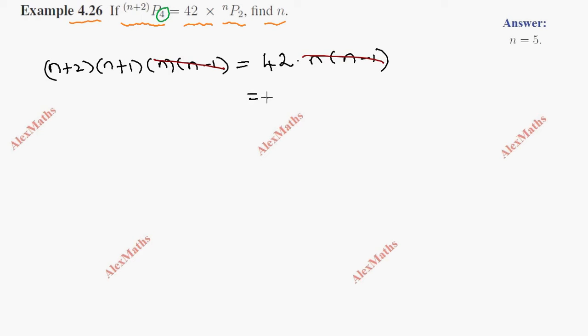We write 42 as 7 times 6. Since (n+2)(n+1) are consecutive numbers, one smaller and one larger, we can equate n+1 equals 6. Therefore n equals 5.